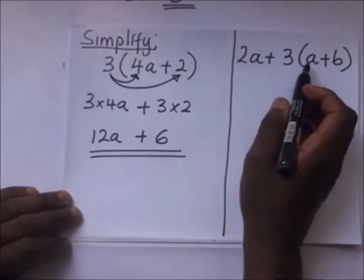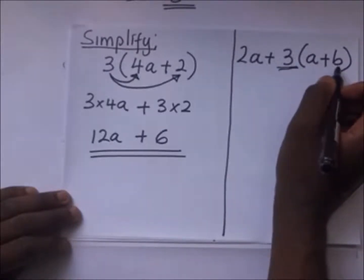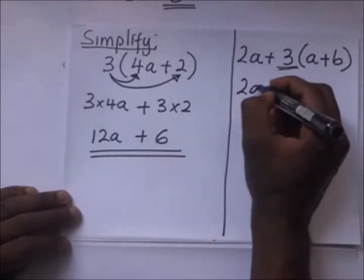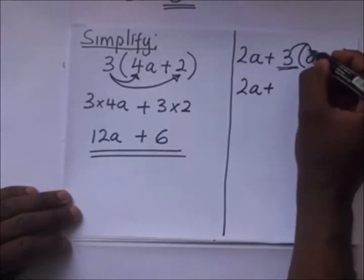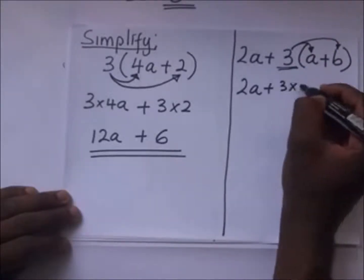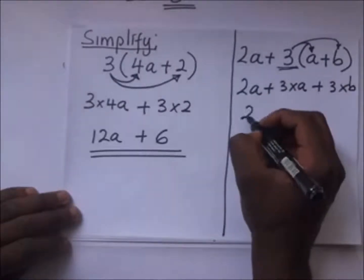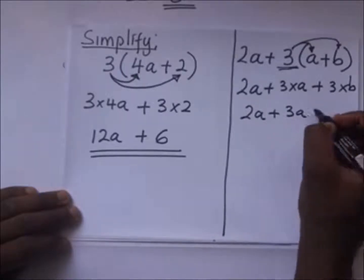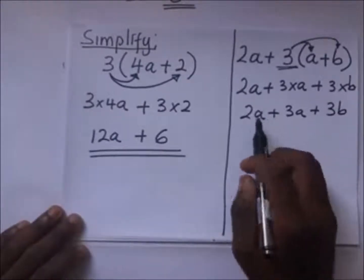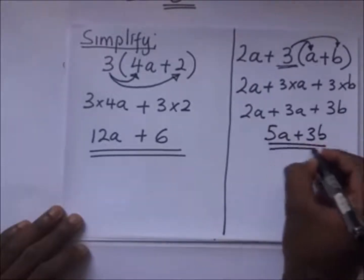Next: 2a + 3(a + b). It is the positive 3 that is outside the brackets. To simplify, we open the bracket: 3 times a plus 3 times b, giving 3a plus 3b. So we get 2a + 3a + 3b. Collecting like terms, 2a plus 3a gives 5a, and we still have plus 3b. The answer is 5a + 3b.